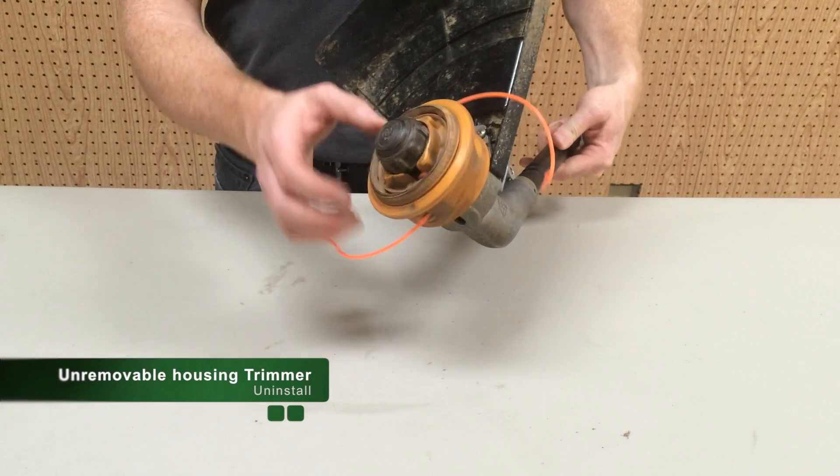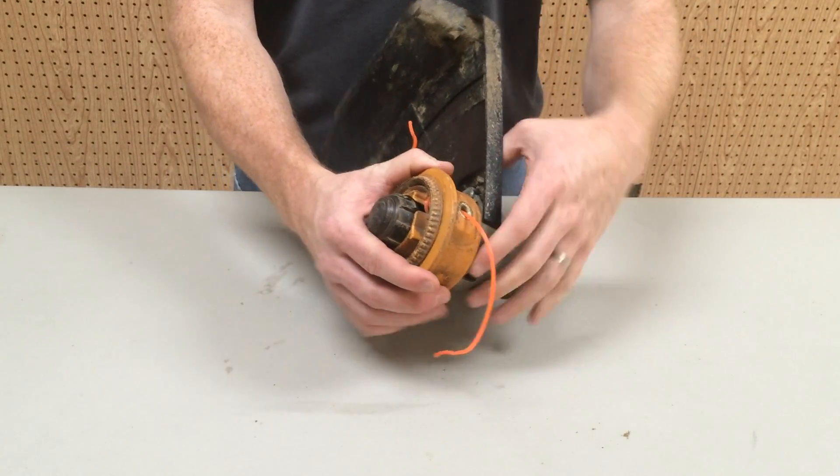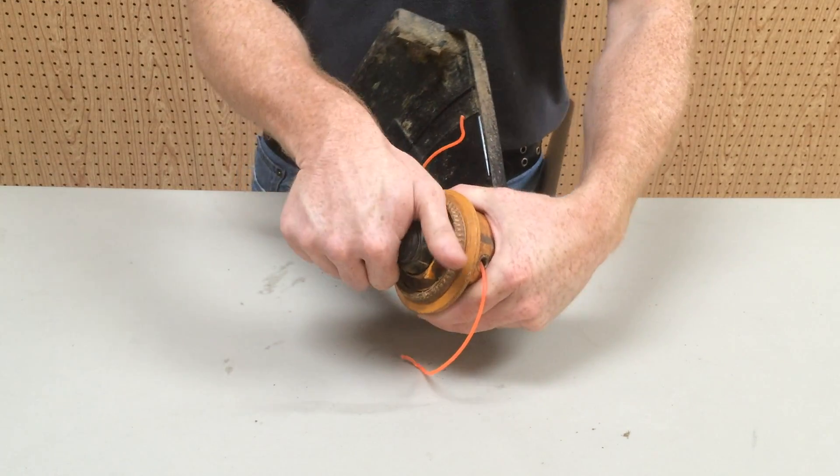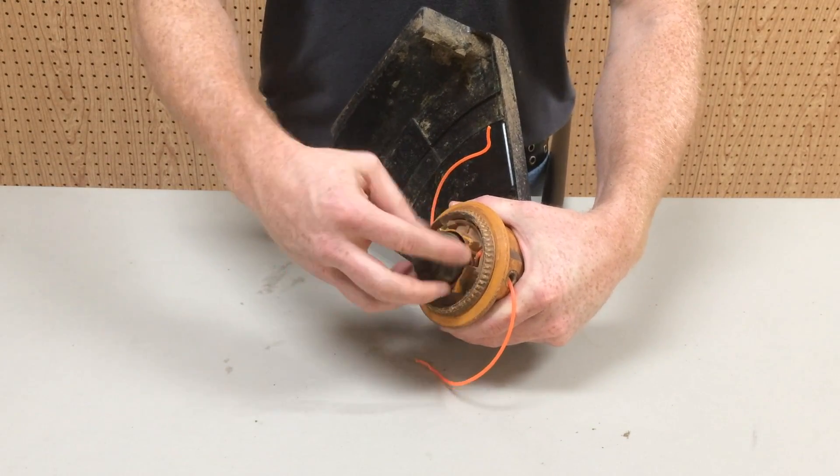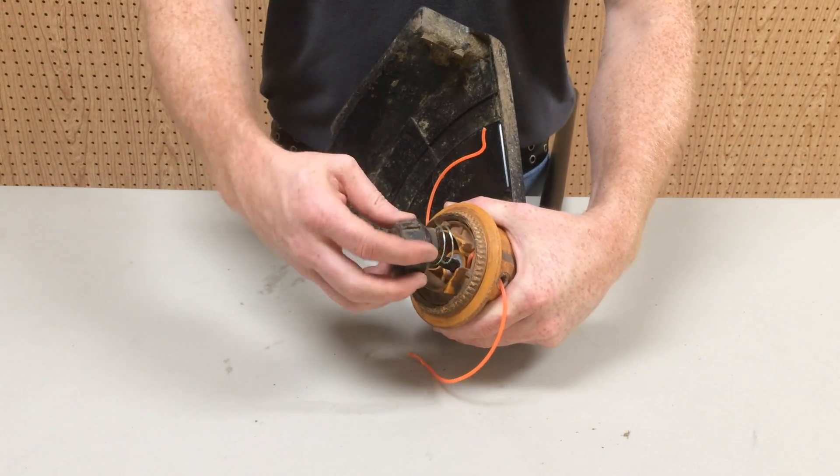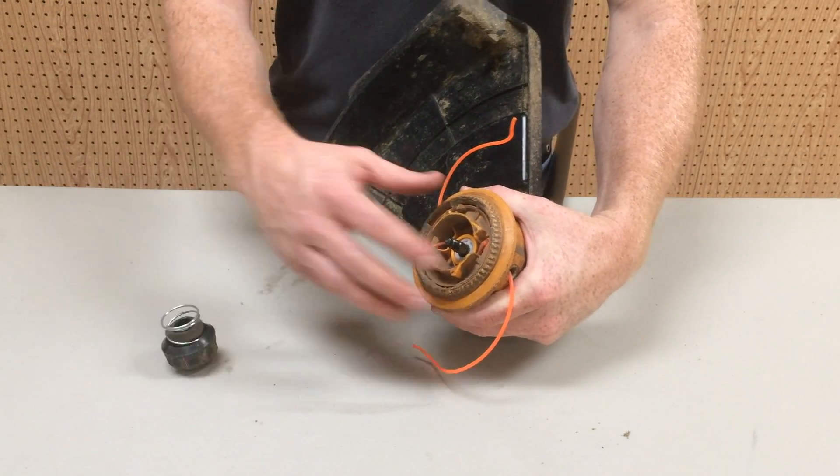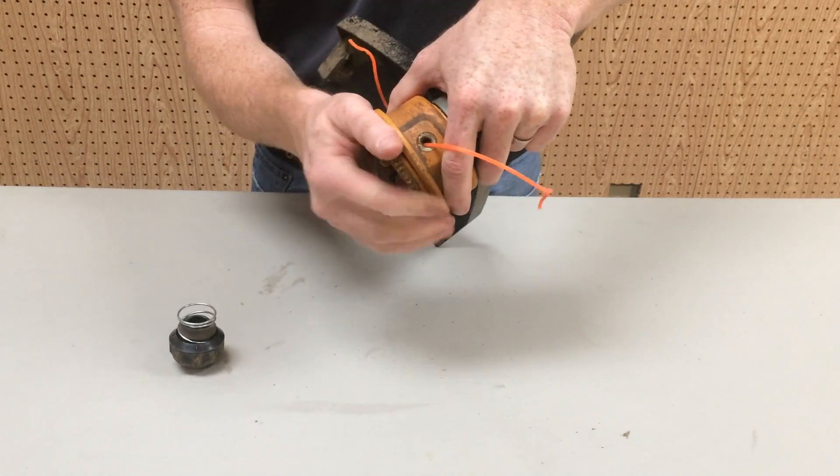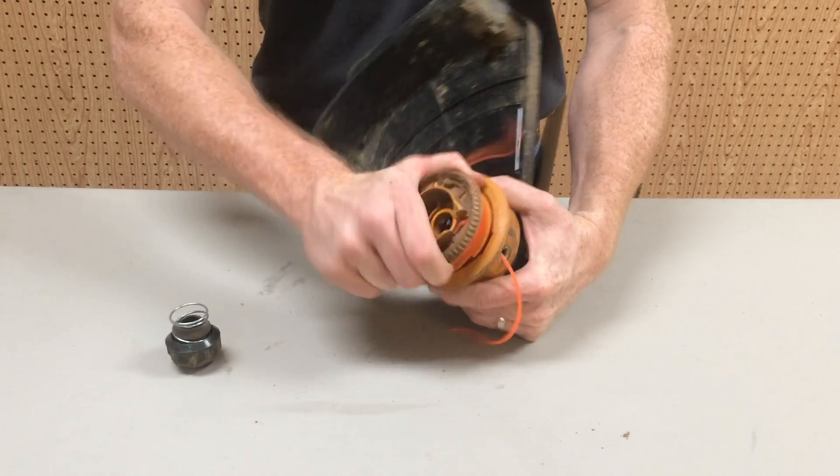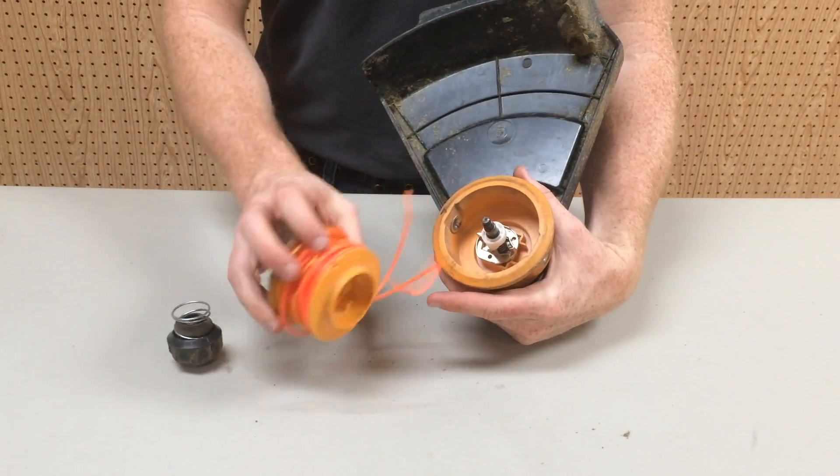First, remove your existing bump knob and spool. Securely hold the trimmer head housing. Unscrew the bump knob. Remove the spool, exposing the threaded shaft.